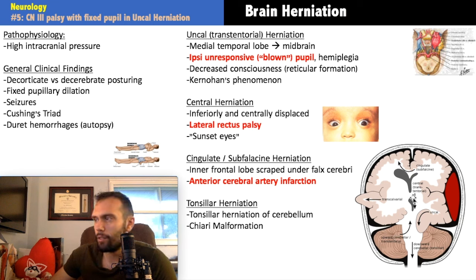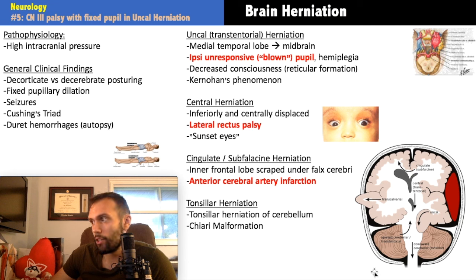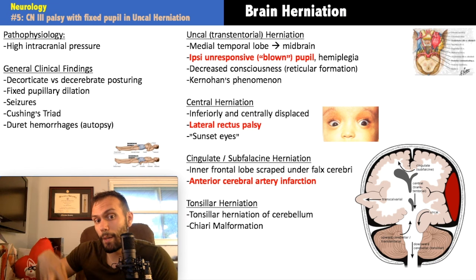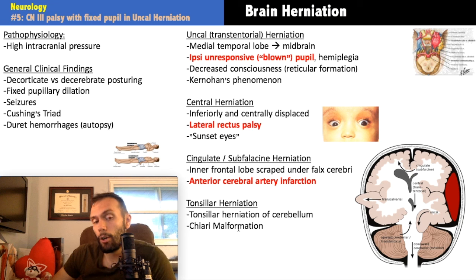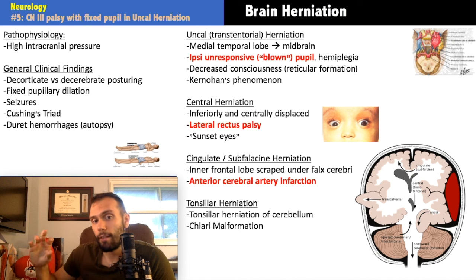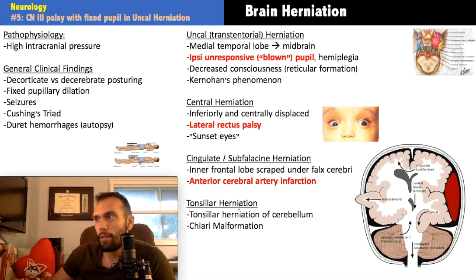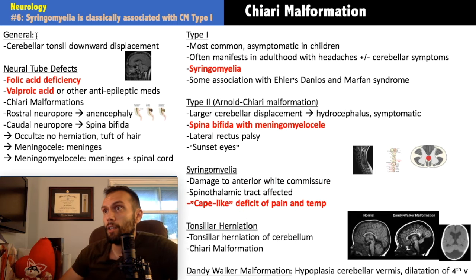Upward herniation occurs when the cerebellum herniates upward — ascending transcentorial herniation — but it's not high yield. Tonsillar herniation — transforaminal herniation — occurs when the cerebellum herniates downward through the foramen magnum, compressing the brainstem and upper cervical spinal cord. This is structurally similar to Chiari malformation. Chiari malformations are characterized by downward displacement of the cerebellar tonsils.